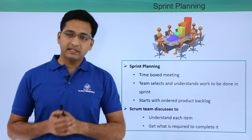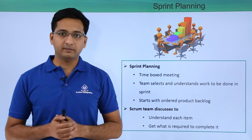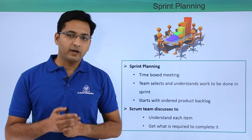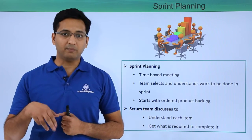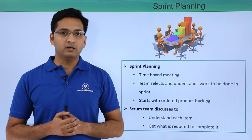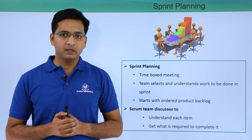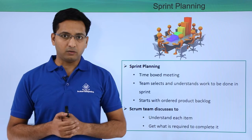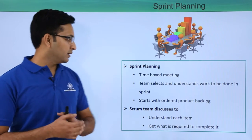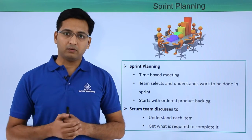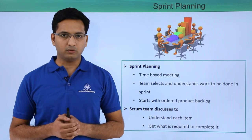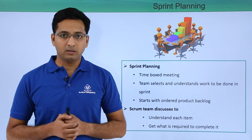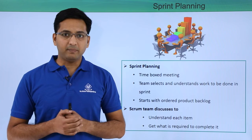The team selects and understands the work to be done in a sprint. This involves having a conversation with the product owner about what will provide value, having a conversation among team members about what is required to achieve that value, and also polishing the user stories written in the product backlog. The sprint planning meeting starts with the ordered product backlog, and it is the product owner's responsibility to have an ordered list of items ready before the sprint planning meeting.